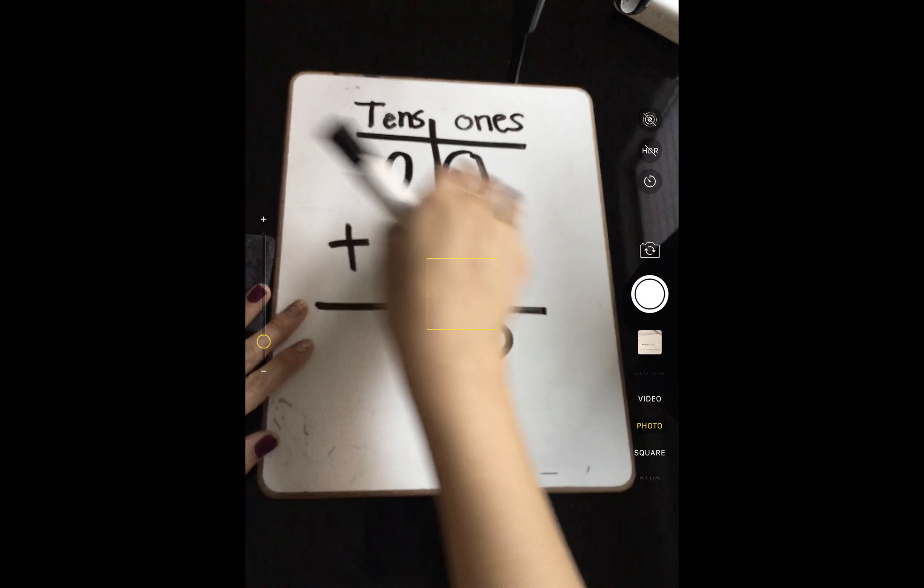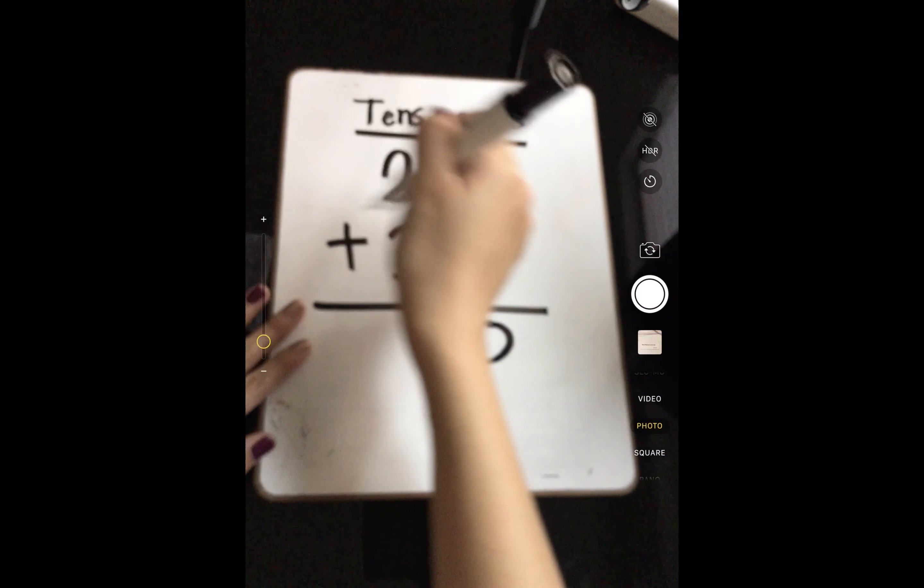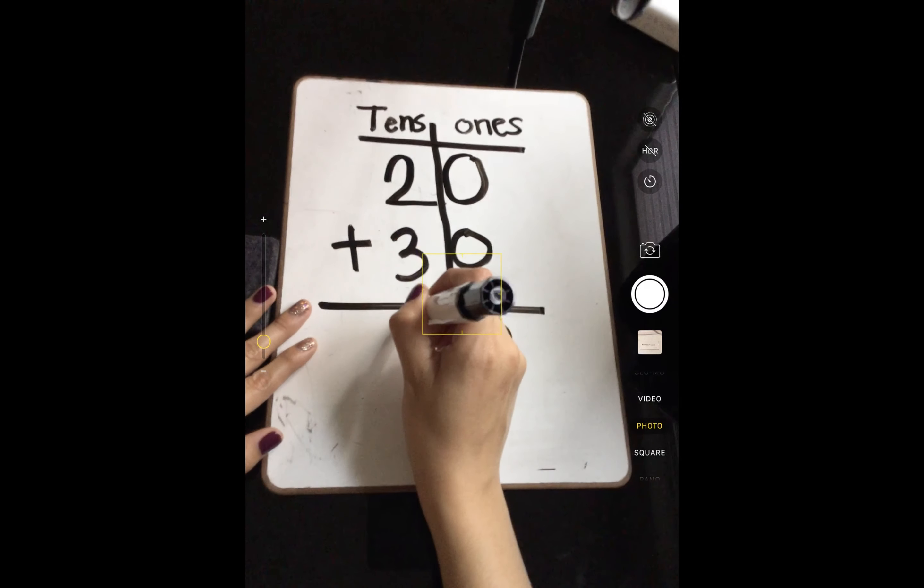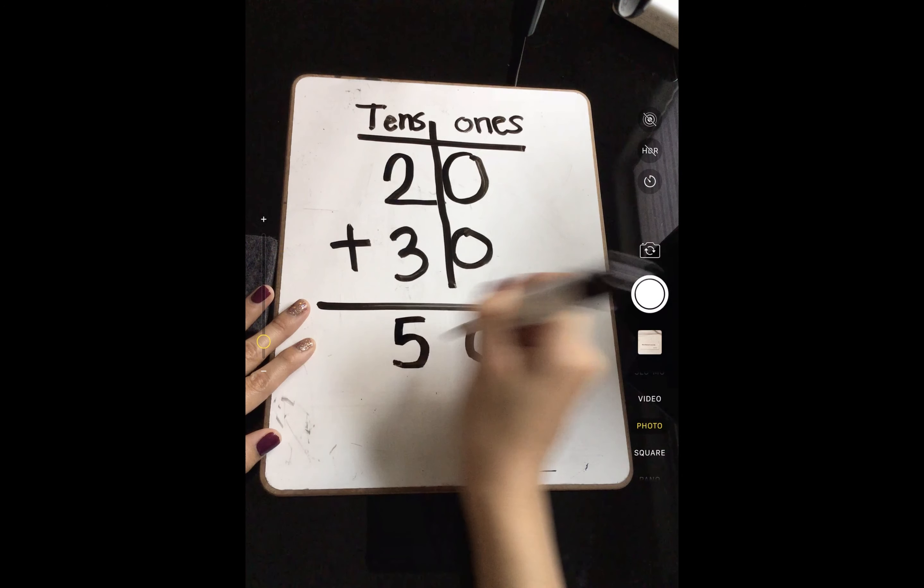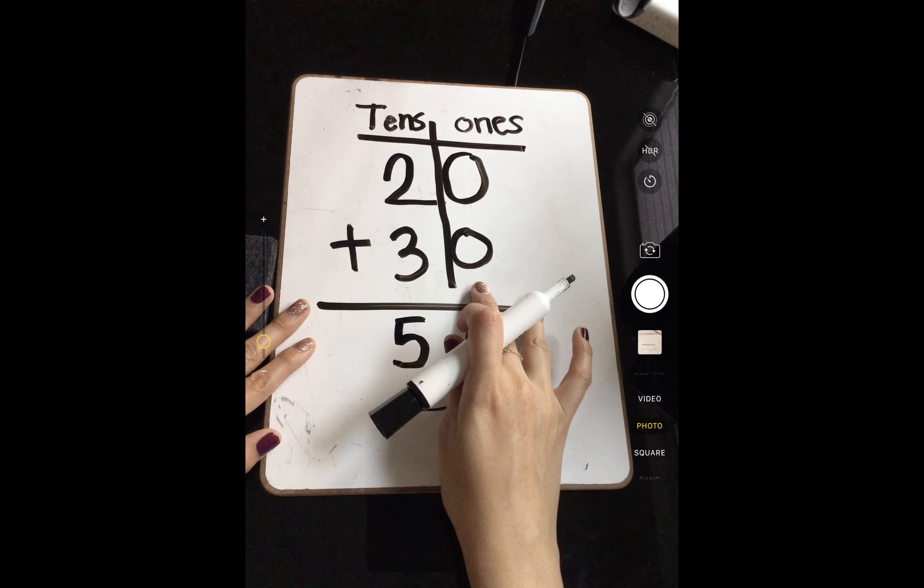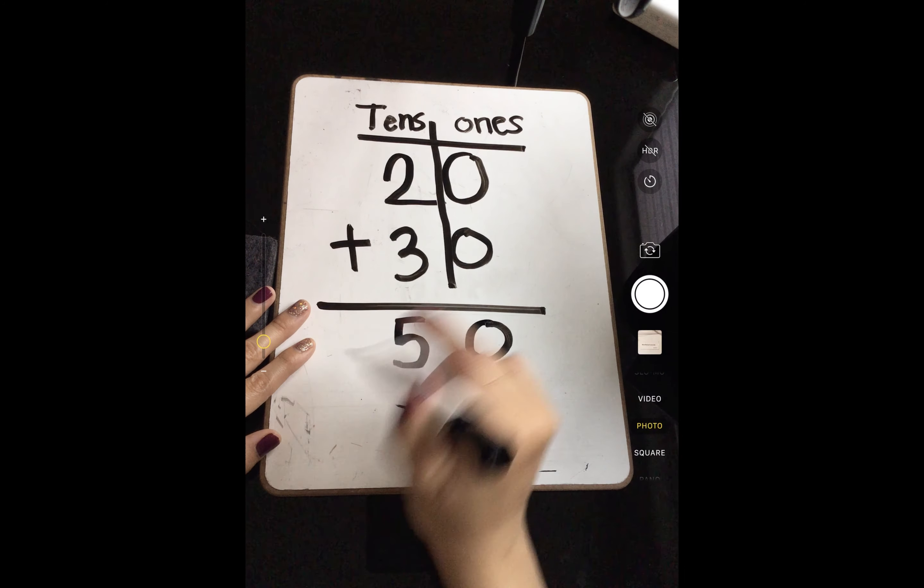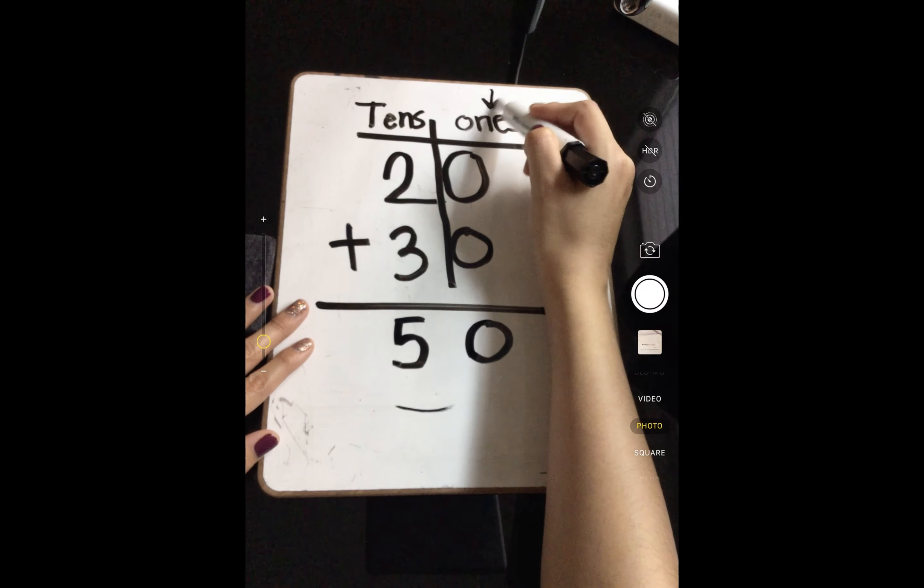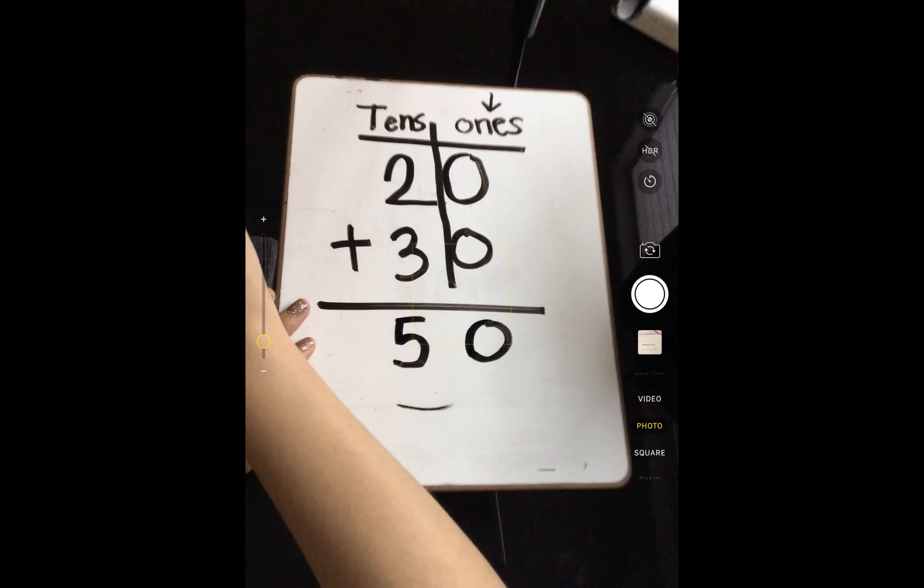Then I hop over to my tens, and then I add my tens. 2 plus 3 is 5, so my sum here is going to be 50. Easy peasy, not having to carry over anything. Just remember, we always add our ones first, then we hop over to our tens.